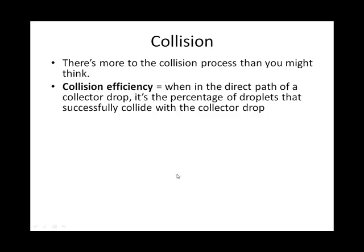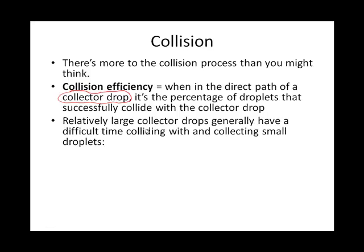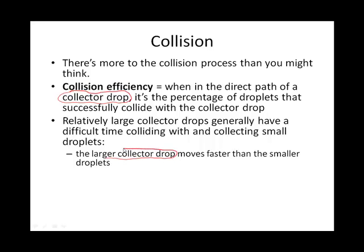There's this thing called collision efficiency. There's a collector drop — the droplet that is on its way down to fall from the cloud — and as it collides with other liquid droplets in the cloud, not all of those collisions will result in coalescence into the collector drop. Large collector drops have a higher terminal velocity, so they fall faster and can smash into the smaller, slower-moving droplets.